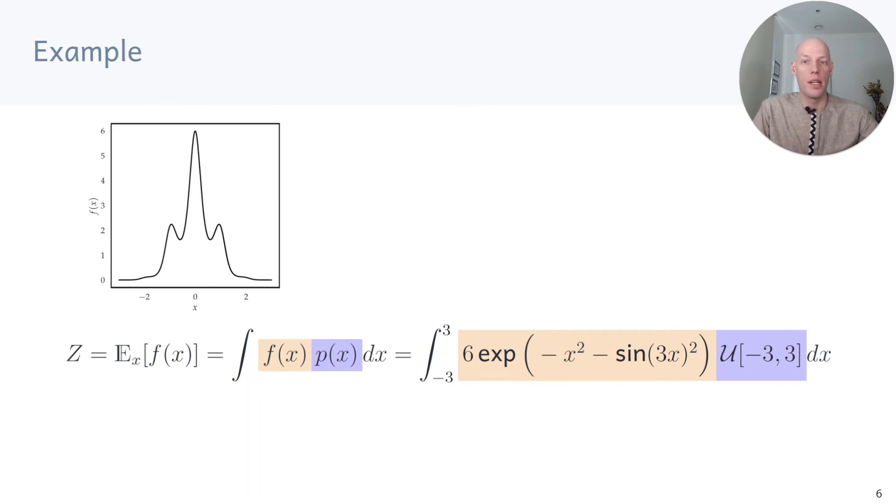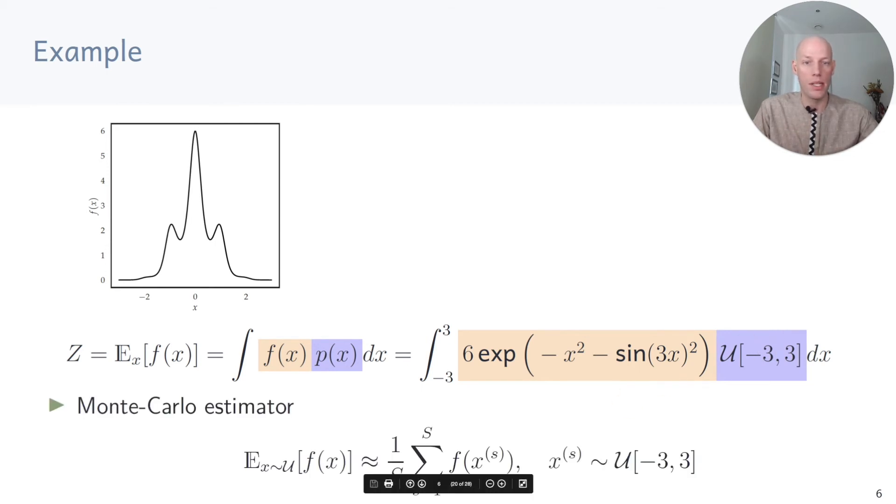Now let's have a look at an example. Assume we want to compute the expected value of a function f of x, which is defined in this orange box and also drawn up here. This is the function we want to integrate from minus three to plus three with respect to a uniform distribution. We get a Monte Carlo estimator by sampling from the uniform distribution, evaluating the function at those samples, sum up the function values and divide by the number of samples.